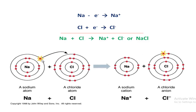In the diagram: sodium's outermost shell has one electron and chlorine's outermost shell has seven electrons. Sodium releases this electron and converts into sodium ion, and chlorine, by accepting this electron, converts into chloride ion. In this way, the sodium chloride molecule is formed.